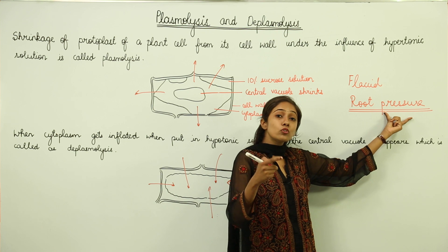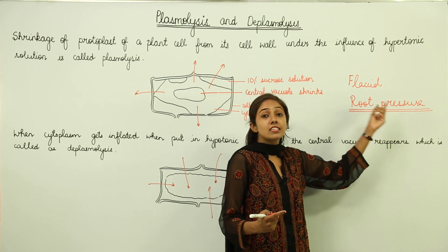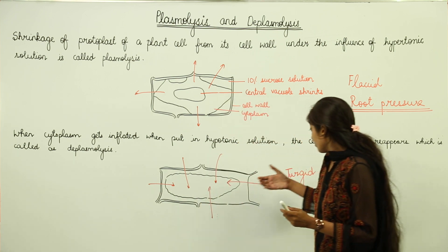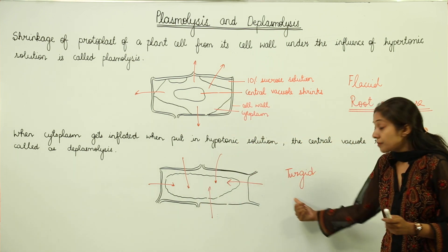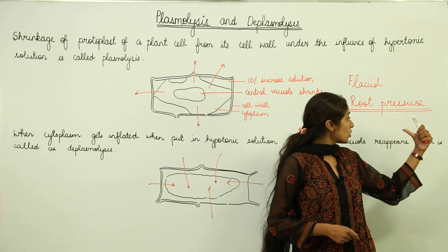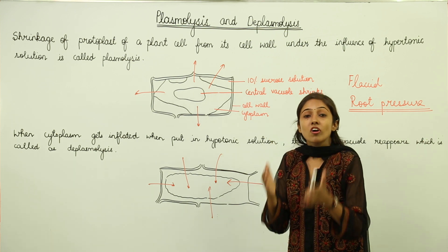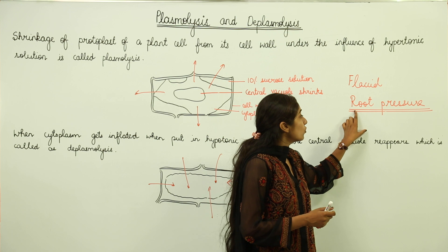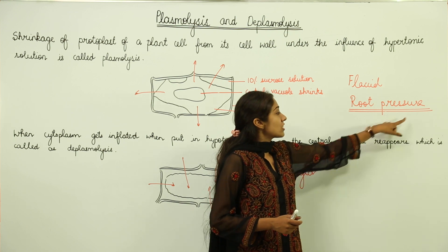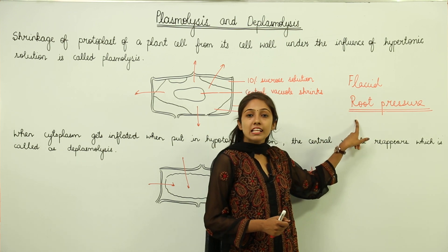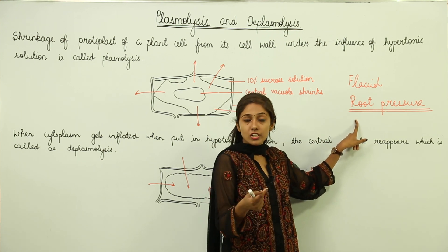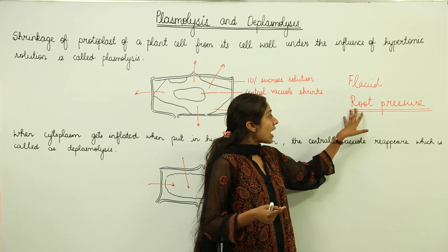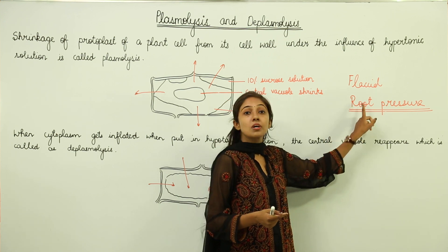How do we define root pressure? The pressure that is developed in the root cells when they are fully turgid, due to which water moves upwards, is known as root pressure. Turgid cells of the root develop a pressure that we call root pressure.